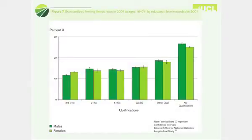Education, of course — I'm sure many of you are very aware of this — relates to levels of health. People with no qualifications on the right of this graph have a greater relative illness than people who've been educated at university, and so there is a social class education gradient here.